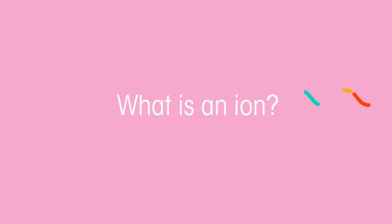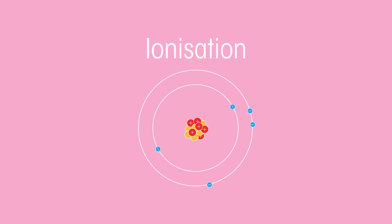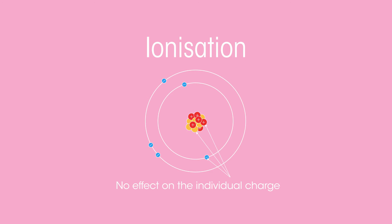Earlier, I mentioned that an atom can become an ion. This occurs when an atom gains or loses electrons to become positively or negatively charged. It has no effect on the individual charges of protons, neutrons or electrons. They stay the same.